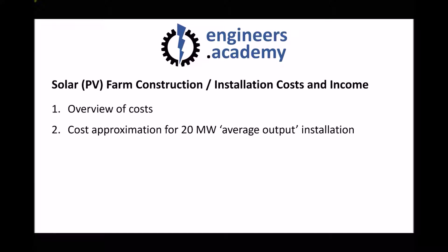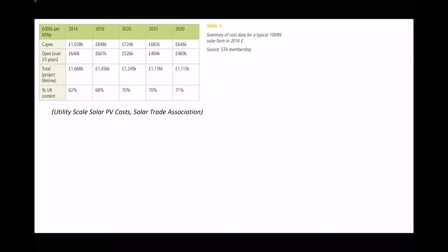Now we can make a cost approximation for our 20 megawatt average output installation using the same approach as before — average data, because there are lots of different variables that can impact on the cost of a specific installation. The first set of data we're going to use is from the Solar Trade Association. This table shows CAPEX (capital expenditure), OPEX (operational expenditure), and total project lifetime costs. For comparison with our wind turbine project, we're only going to be looking at capital expenditure. We can see that the operational expenditure over 25 years is relatively small — the 640,000 would be spread across 25 years.